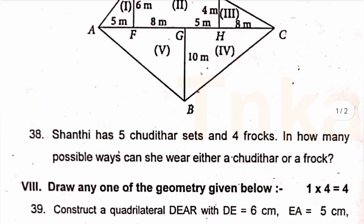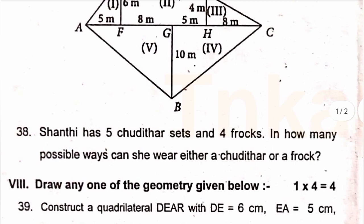38, Shanti has 5 chudithar sets and 4 frocks. In how many possible ways can she wear either a chudithar or a frock?